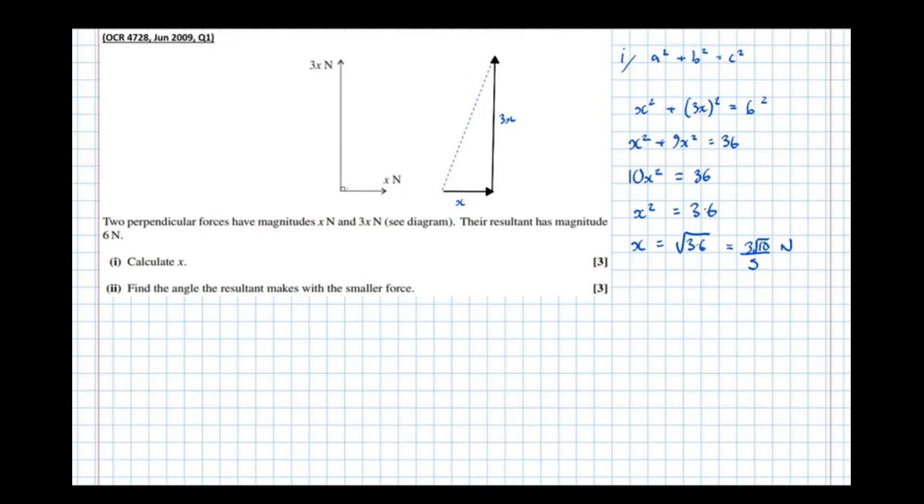And keeping the answer exact in maths is a good idea, unless instructed otherwise. In physics, typically the preferred rounded answers and the precision that you need to round your answer to would be given in the question. But for the purposes of maths, unless asked otherwise, it's better to keep the answer exact because that will make your answer more precise, more accurate in later parts of the question.